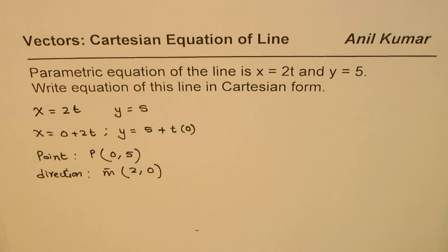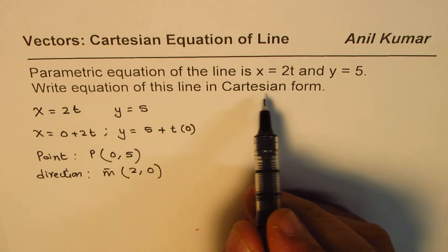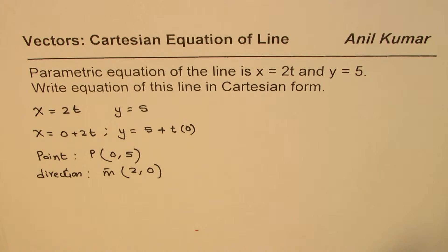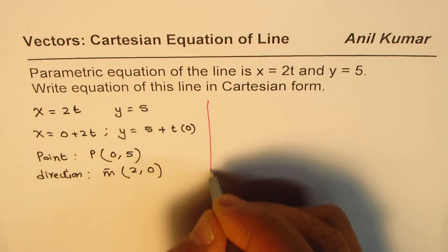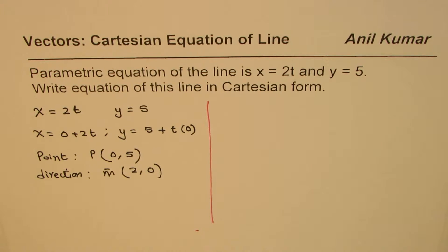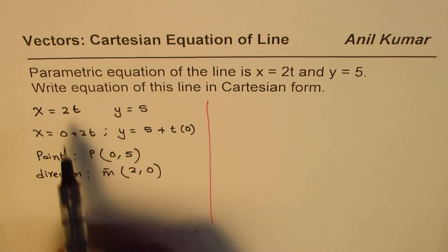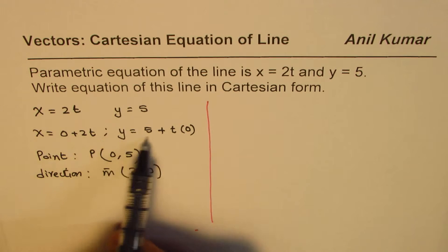Once we get it, it is easier to write the equation of the line. Now to write in Cartesian form, there are many methods which we could adopt. One of the simplest one is to write the equation with the parameter t, so let's isolate t.